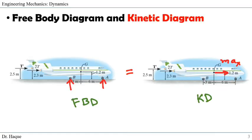Here is another example for planar rigid body motion — a plane. For the free body diagram, we draw the reaction force at B (NB) and reaction force at A (NA). If there are two tires at point B it would be 2NB. The kinetic diagram shows only the acceleration in the x-direction, since the plane has no rotation or acceleration in the y-direction, giving us just ma. These diagrams help us apply equations in planar rigid body motion.